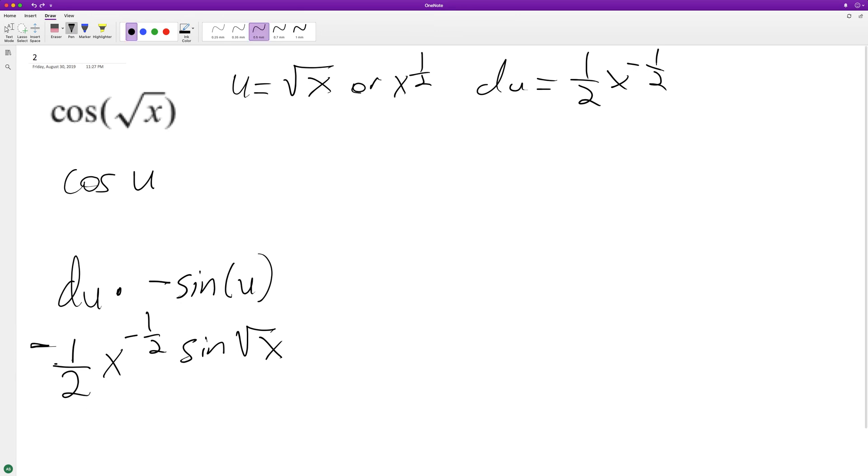So we can write this as negative sine of square root of x over two times the square root of x, or you could write x to the one half, it doesn't matter. So anyway, that's how you do that. I hope this helped you out. Thanks for watching, have a great day.